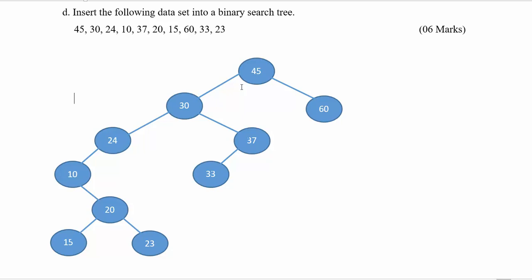Remember the conditions we have to consider when inserting values into a binary search tree. You can have only two children for one particular node. When the value is less than the node value you are comparing, it should go to the left-hand side, and when the value is greater, it should go to the right-hand side.